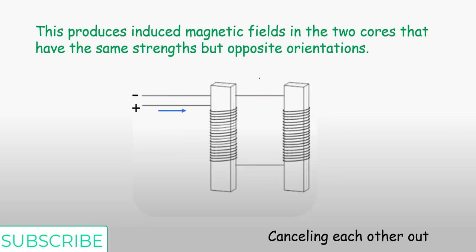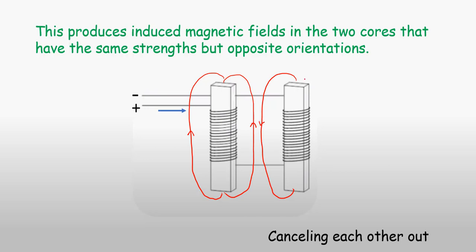This will induce magnetic fields in two cores that have the same strength but opposite orientation. Because they have the same strength, they will tend to cancel out. You obtain magnetic fields of the same strength by ensuring that the dimensions of the rods are equal and the number of turns of these coils are also the same.